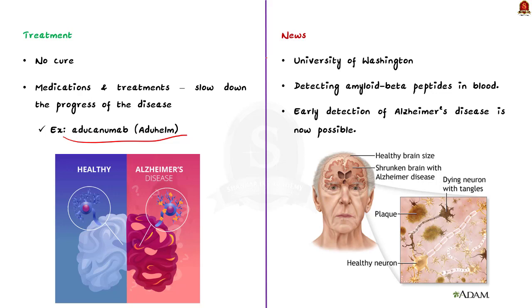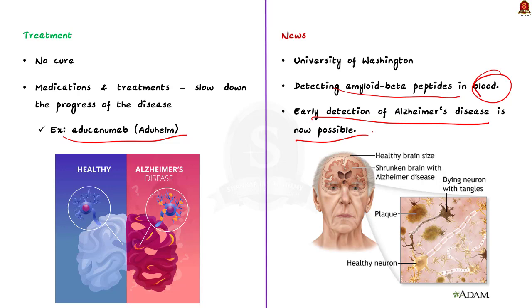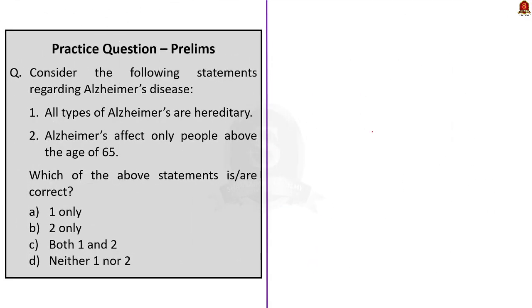Until now, Alzheimer's was detected only after symptoms like memory loss appear. But researchers at the University of Washington have devised a blood test that can measure levels of beta amyloid peptides, enabling early detection before symptoms appear. This is the key development discussed in this news article.